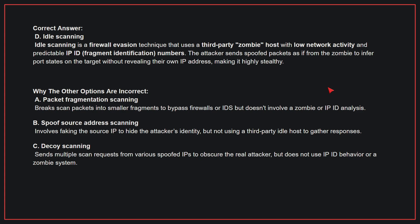Why the other options are incorrect: A, packet fragmentation scanning — this breaks scan packets into smaller fragments to bypass firewalls or IDS, but doesn't involve a zombie or IP ID analysis. B, spoof source address scanning — this involves faking the source IP to hide the attacker's identity, but not using a third-party idle host to gather responses. C, decoy scanning — this sends multiple scan requests from various spoofed IPs to obscure the real attacker, but does not use IP ID behavior or a zombie system.